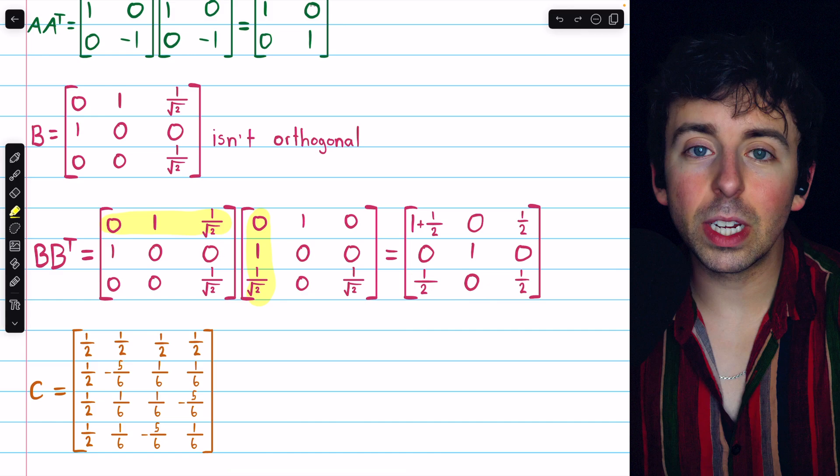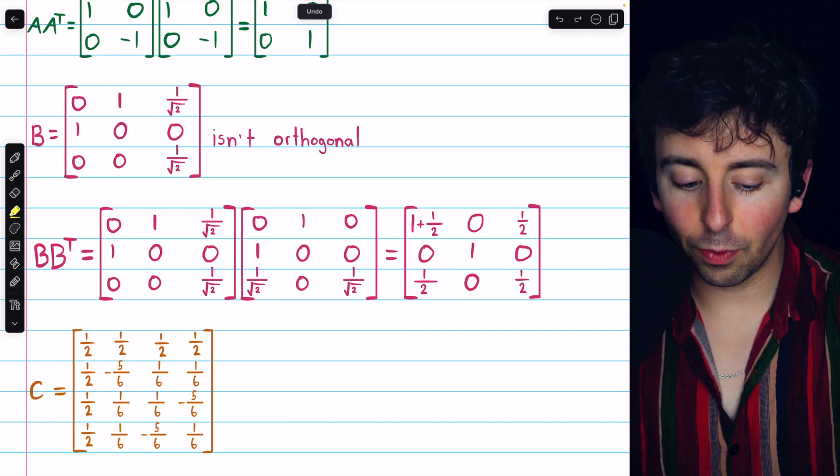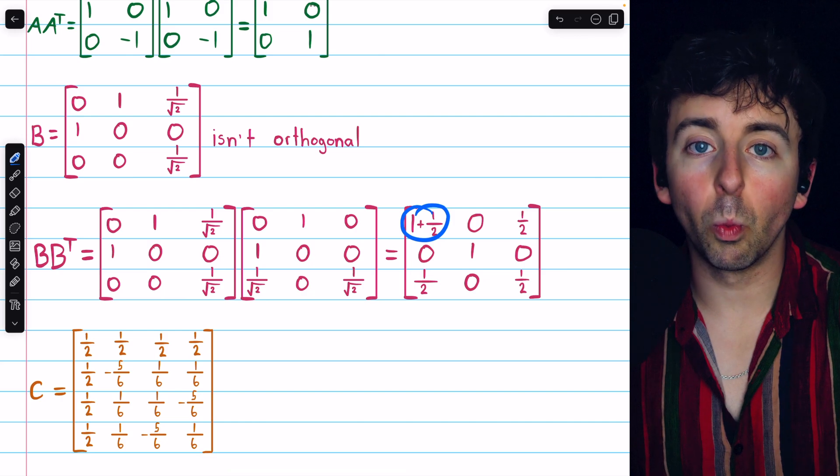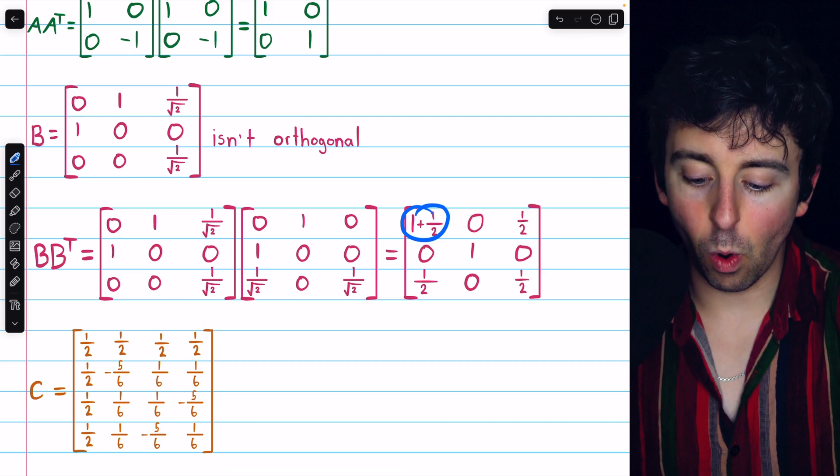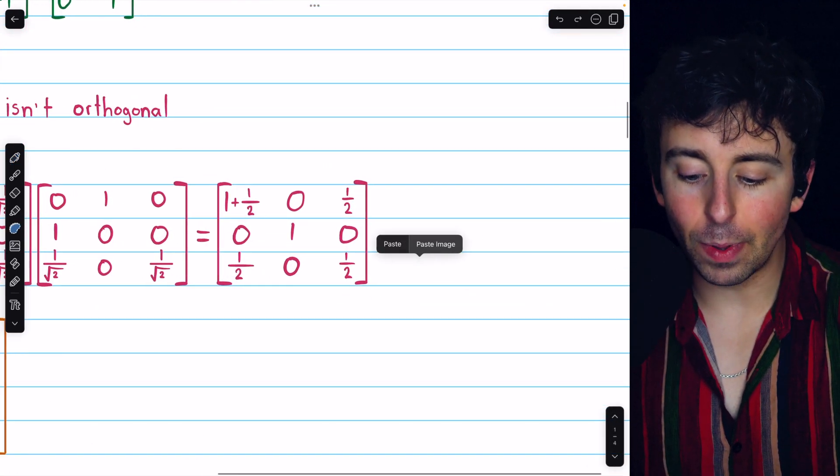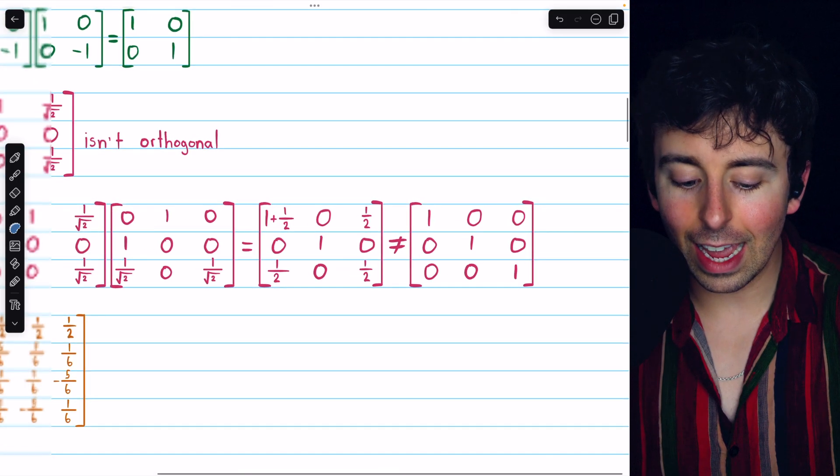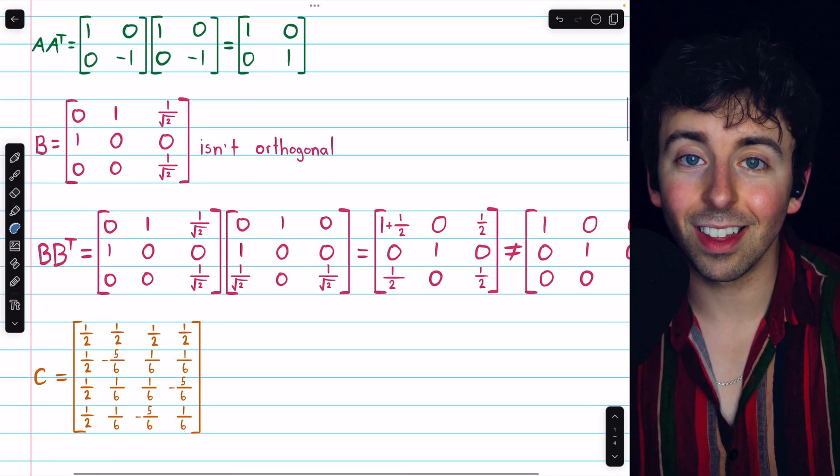So already we know that B is not orthogonal, because if it was, this first entry would have to be 1, since it'd have to be the identity, but 1 plus 1 half is not 1, so clearly B times B transpose is not the identity matrix, and so B is not orthogonal.